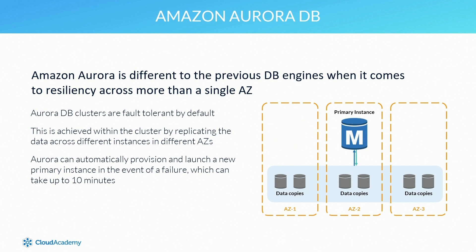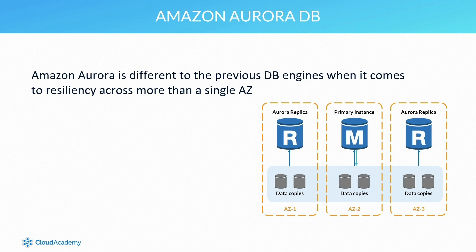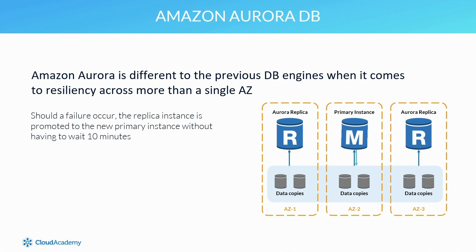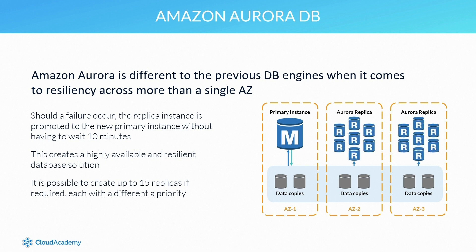Ten minutes can be a significant amount of time in a critical production environment. However, this time can be significantly reduced if you enable multi-AZ on your Aurora cluster, which allows RDS to automatically provision a replica within a different AZ. With this replica in place, should a failure occur, the replica is promoted to the new primary instance automatically — without waiting the 10 minutes. It's possible to create up to 15 different replicas if required, and you can associate each a priority defining which replica will take over as primary.